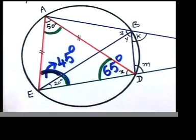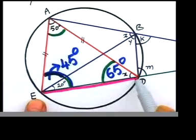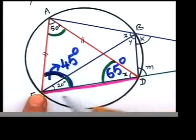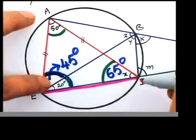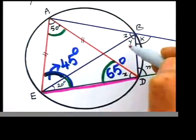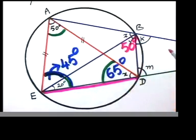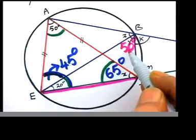Now back to circle geometry — we need to apply those rules. Do you see angles in the same segment? Look at chord ED carefully: ED makes an angle of 50° on one side of the circumference, and the same chord ED makes another angle — y — on the other side. Angle y should be 50°, using angles in the same segment.